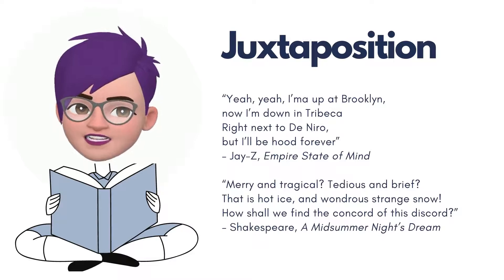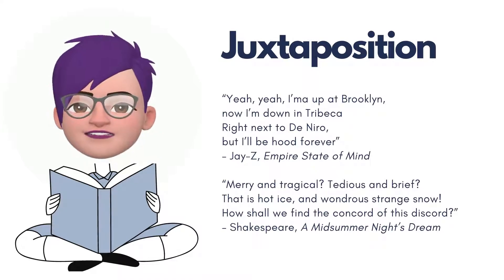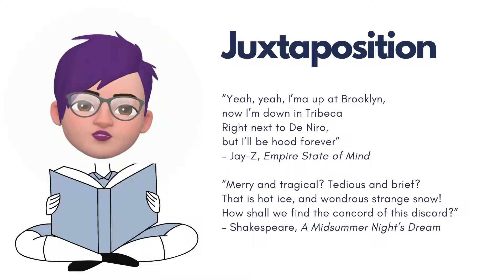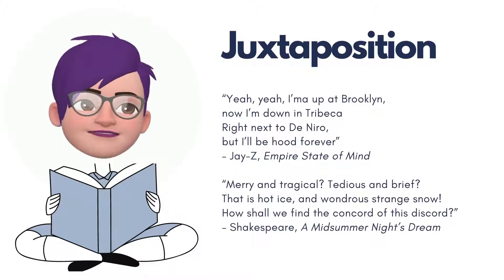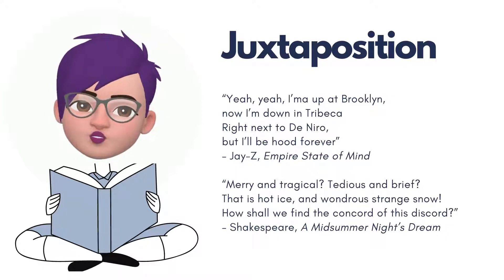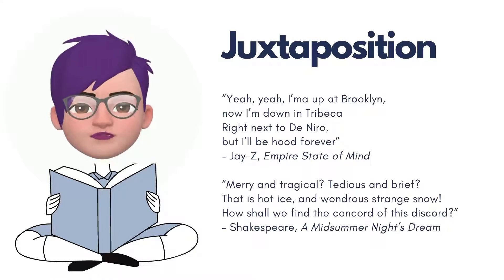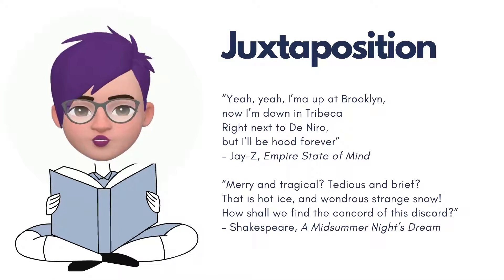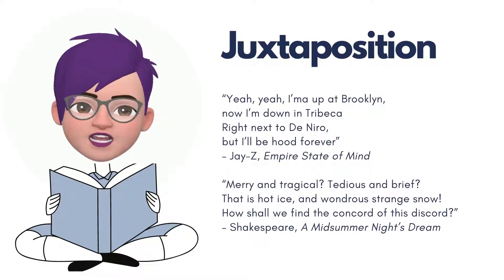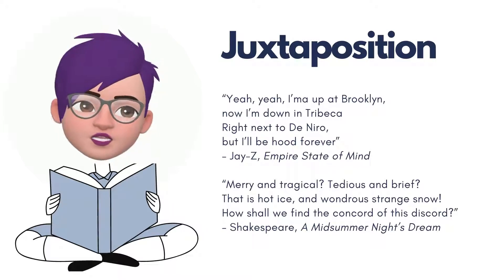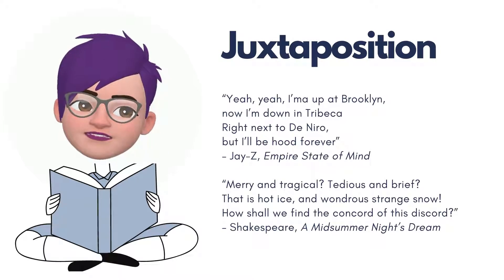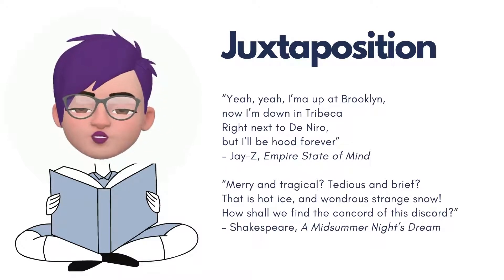Juxtaposition. By placing two words or ideas next to one another we can highlight the differences between them. Juxtaposition can be used on a small scale between words or images, or on a large scale between two characters or storylines. The effect can be funny or dramatic depending on how it's used. A huge lion cowering in fear at the sight of a tiny mouse is a silly image. A grandmother holding a newborn baby might be a very powerful image because it juxtaposes the concepts of birth and death, or youth and old age.